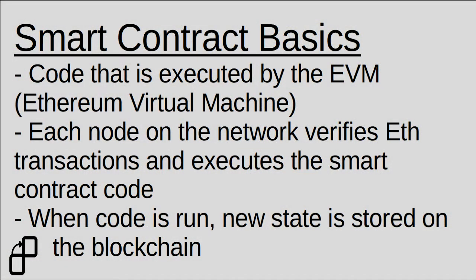So first, let's talk about some smart contract basics. What a smart contract actually is, is it's code that's executed by the Ethereum virtual machine. The Ethereum network, like the Bitcoin network, is a decentralized network with a bunch of nodes working together to validate transactions. And with Ethereum, each node on the network verifies state changes to the Ethereum blockchain by running smart contract functions invoked by transactions.